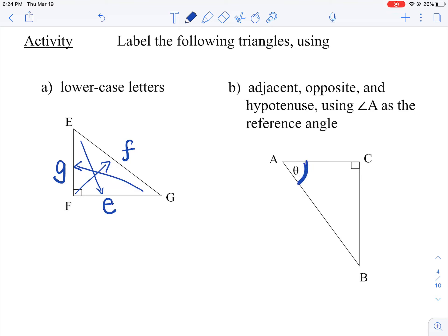Angle A is your reference angle. Like I said before, the hypotenuse will always be the easiest one to label because it's the longest side across from the 90 degree angle. So this guy right here will be the hypotenuse.